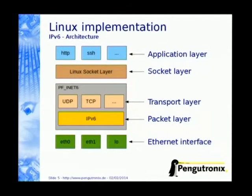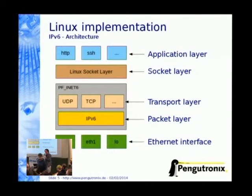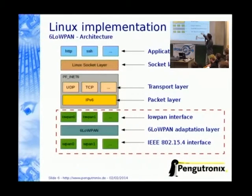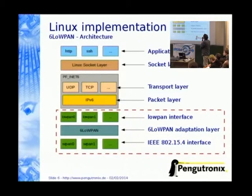Now the Linux implementation. This graphic shows basically how normal IPv6 looks like: we have an application layer, then a socket layer, transport layer, and network layer. On the bottom we have the Ethernet interface. With 6LoWPAN there is no Ethernet interface — instead we have a lowpan interface and a wpan interface, which is the IEEE.4 interface. In the middle we have a 6LoWPAN adaptation layer — that's something magic I will describe later. From the user-space side, we don't need to change user-space applications into 6LoWPAN applications. It's still an IPv6 application — you don't need to change it.